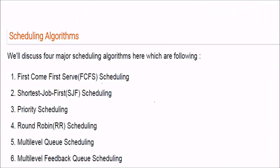We are discussing scheduling algorithms in operating systems. The scheduling algorithms are: First Come First Serve (FCFS), Shortest Job First, Priority Scheduling, Round Robin, Multi-level Queue Scheduling, and Multi-level Feedback Queue Scheduling. We'll take the first four and go through examples for each.